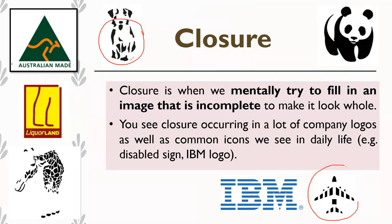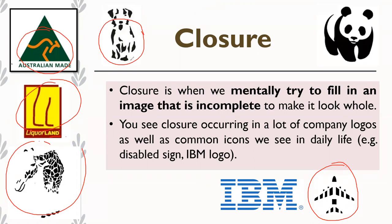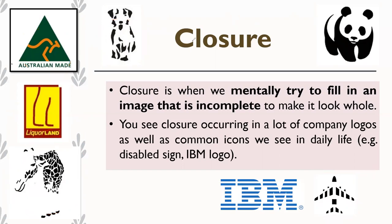Similarly, an incomplete sketch might be identified as an airplane, a giraffe, or even a company logo like the Australian Made kangaroo — just a few lines, yet we perceive it as a kangaroo. Closure is when an image is not completely filled in or connected, but we still make a guess based on our previous experience of similar images. Our brain closes the gaps in that image by itself — hence the name closure.